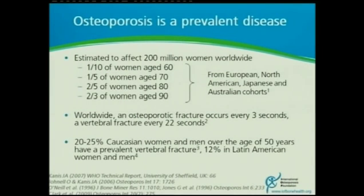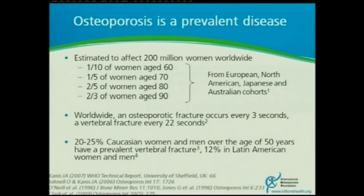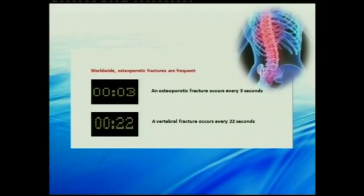It's a prevalent and very common disease, increasing worldwide. In North America, European countries, Japanese and sterling cohorts, this is the prevalence of the disease in women. Osteoporotic fracture is the main sequela of the disease — that's why we are interested in treating and preventing osteoporosis. An osteoporotic fracture occurs every three seconds. A vertebral fracture occurs every 22 seconds. Almost a quarter of Caucasian women and men over the age of 50 will have multiple vertebral fractures. It's like a ticking bomb.